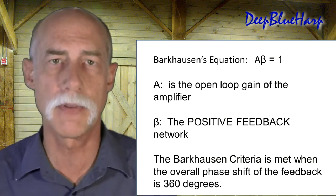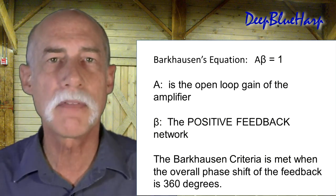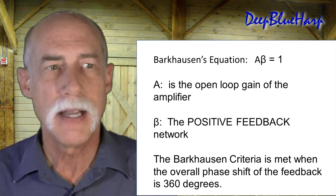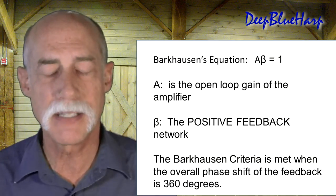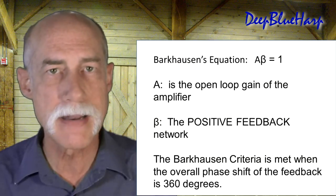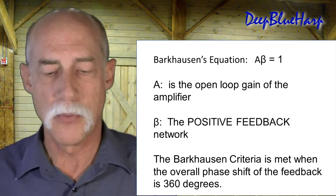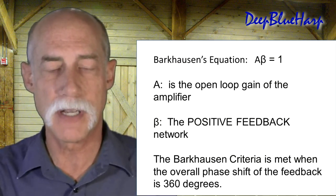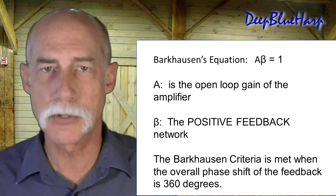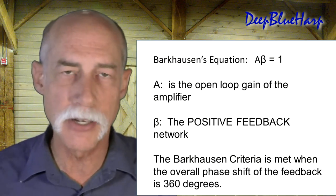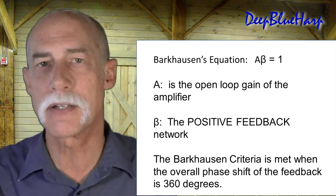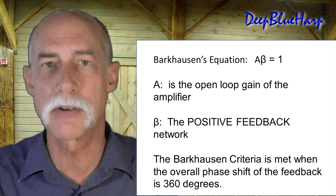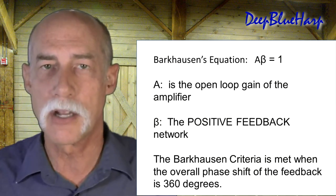Quick review. Barkhausen equation. Amplification times beta equals 1. A is the open loop gain amplifier and B is the positive feedback network. It's met when A times beta equals 1 and that means I have a phase shift of 180 degrees through the amplifier. I add another 180 degrees to it which turns it back to its original form at the input of the amplifier. That completes 360 degrees of the cycle and the equation is satisfied.